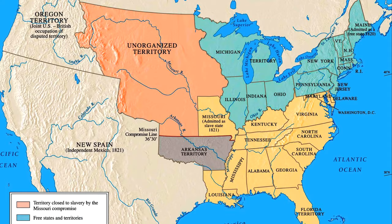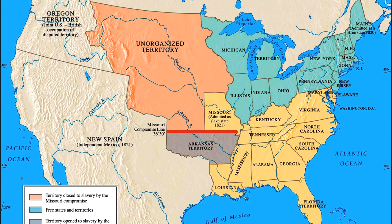The plan also sought to settle the issue of slavery in the West for good by splitting the Louisiana Purchase in two along the 36°30' latitude line. North of the line, slavery would be illegal. South of the line, slavery would be legal.